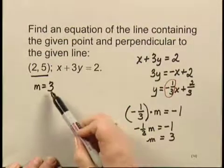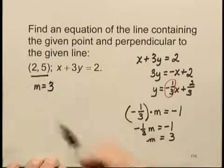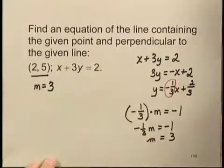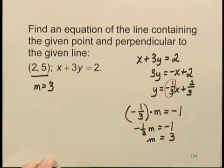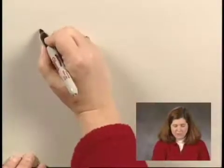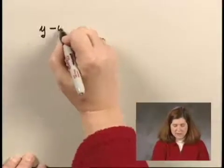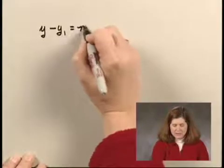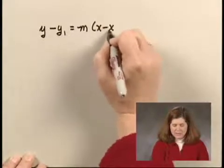Now that we know the slope of the line and a point on the line, we can find an equation of the line, and we're going to do it using two methods so that we can check our answer. We'll start by using the point-slope form of the line, which is y minus y sub 1 equals m times x minus x sub 1.